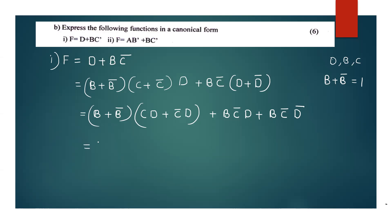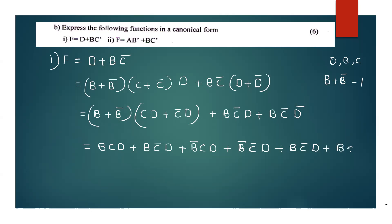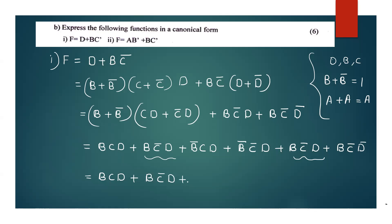Expanding fully we get: bcd plus bc complement d plus b complement cd plus b complement c complement d plus bcd plus bcd. After removing repeated terms, the canonical sum of minterms form is: bcd plus bc complement d plus b complement c complement d plus bc complement d complement plus b complement cd.